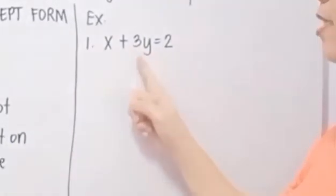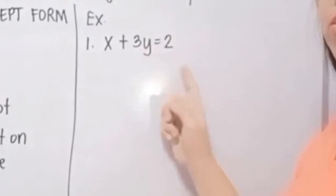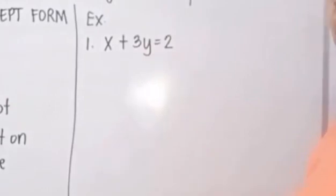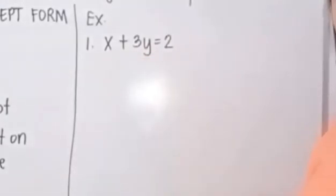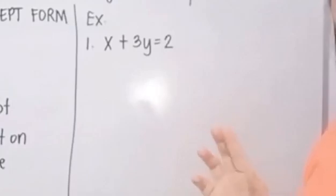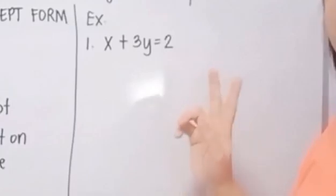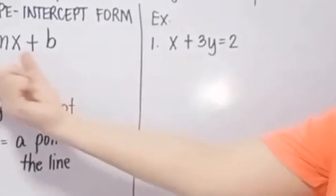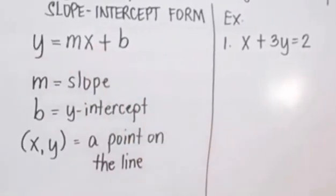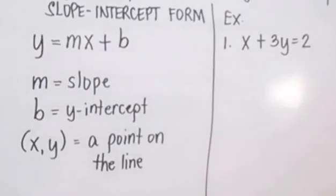We have X plus 3Y is equal to 2. This equation is written in standard form, so what we are going to do is rearrange it into Y equals MX plus B — the slope-intercept form.